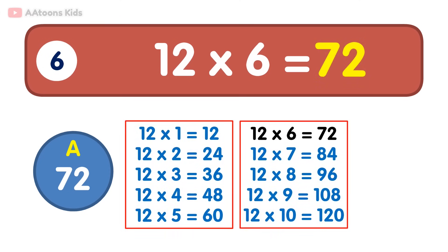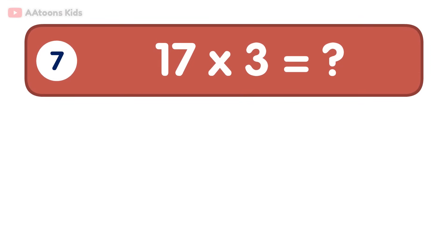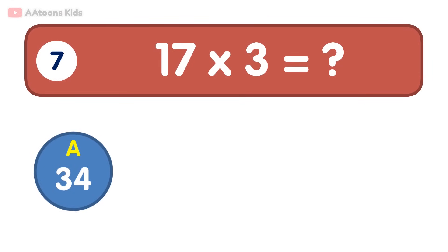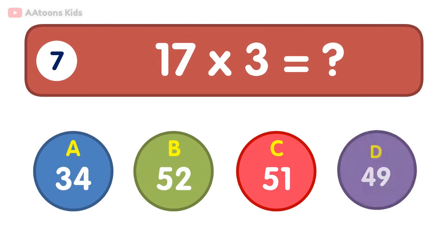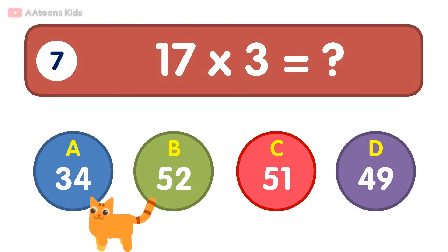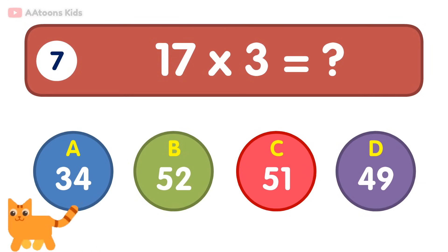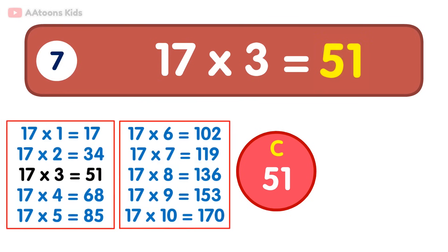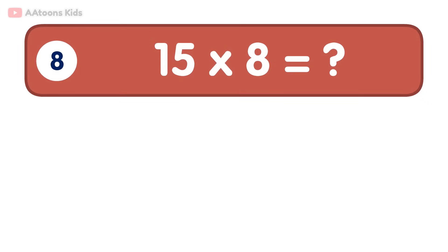72. 12 times 6 is 72. 17 times 3 is equal to 51. 17 times 3 is 51. 15 times 8 is equal to...